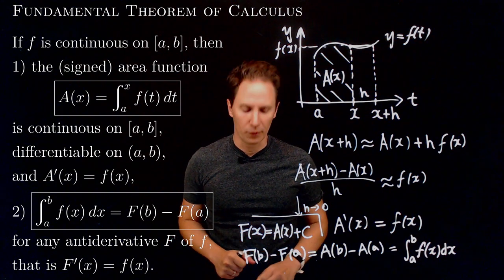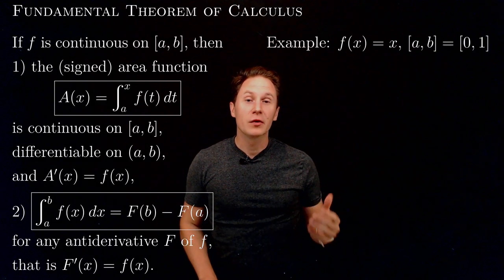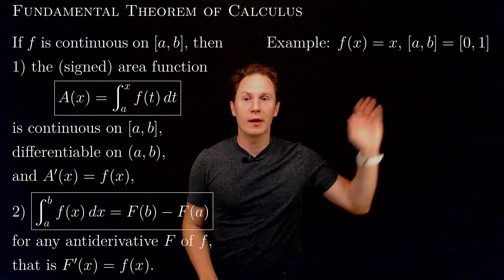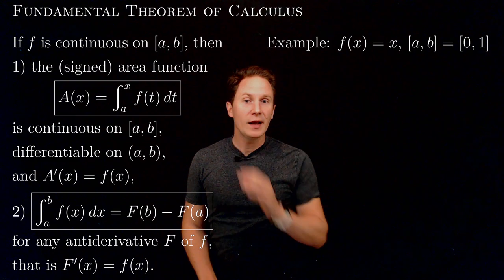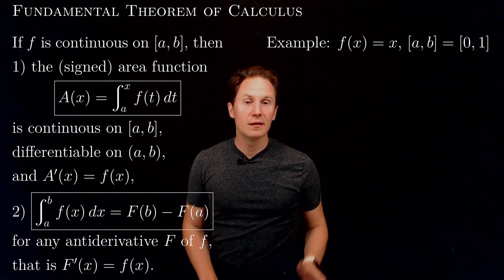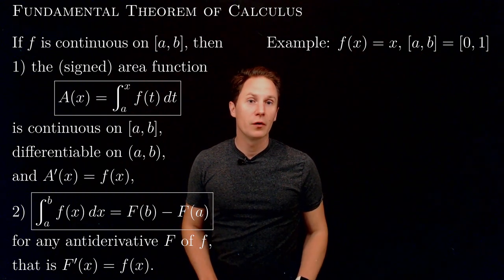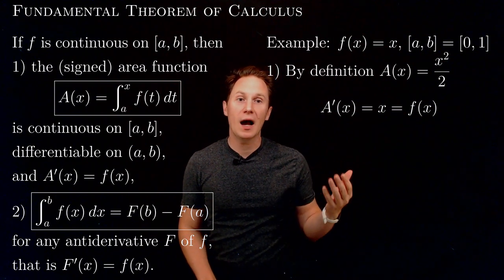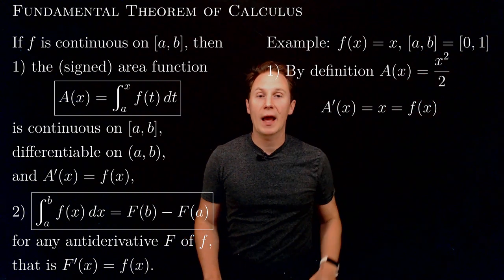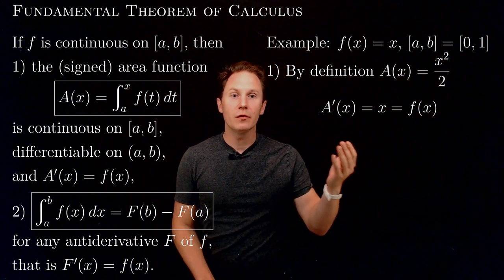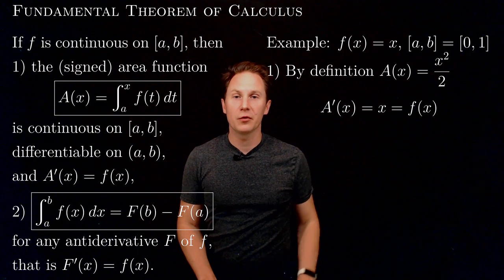Now let's look at an example. Let's consider the function f of x equals x over the closed interval between 0 and 1. The signed area function for this function from 0 to x will be the area under the graph of the function, and that area is just the area of a triangle with base x and height x.